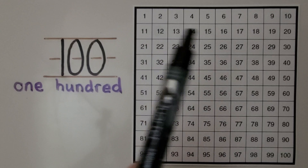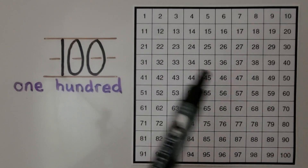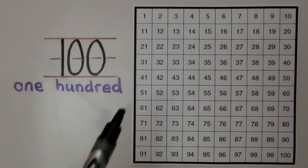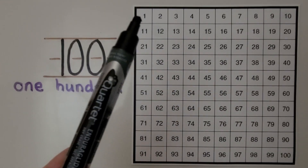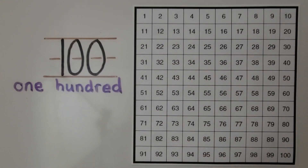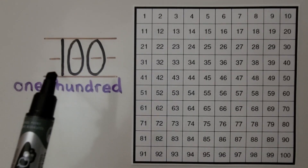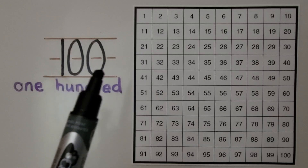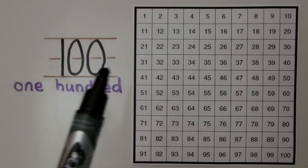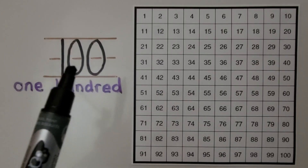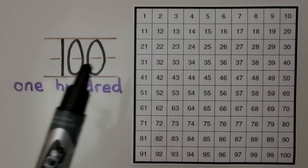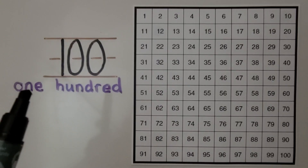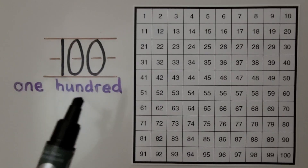This is a 100 chart. It goes in counting order from 1 all the way to 100. This is the number 100 — 1, 0, 0. All together, this is the number 100.